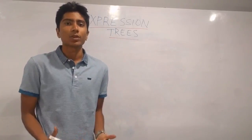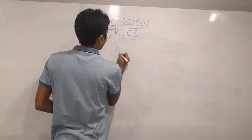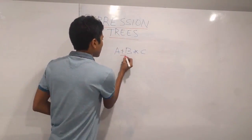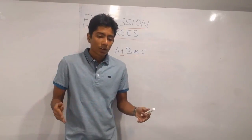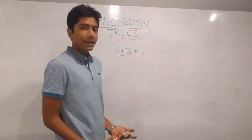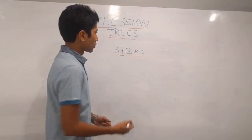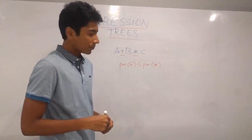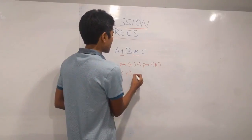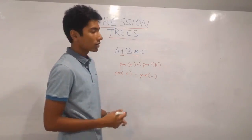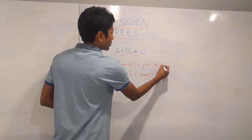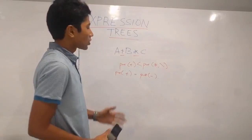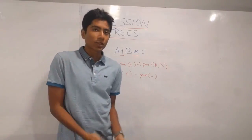Now let's talk about how we can make an expression tree. For that we'll need an expression — let's say we have A plus B into C. Operators here are plus and into, which means they have different precedence. When I say precedence, it means which operator is more important, which needs to be done first. Usually the plus operation is given lesser precedence than the multiplication operation. Also, plus has equal precedence to the minus operator, and multiplication and division are given the same precedence. The operator with the minimum precedence is checked for first while making an expression tree.